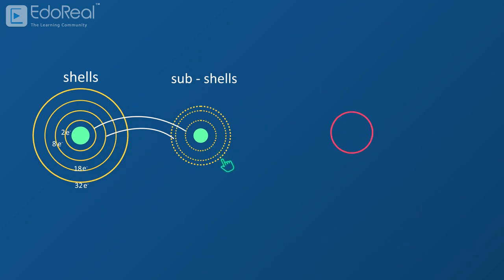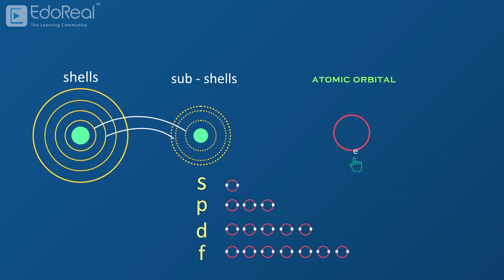Each subshell consists of one or more atomic orbitals, where exactly an electron is found. The subshells S, P, D, F comprise 1, 3, 5, 7 orbitals respectively. Each orbital can contain a maximum of 2 electrons.